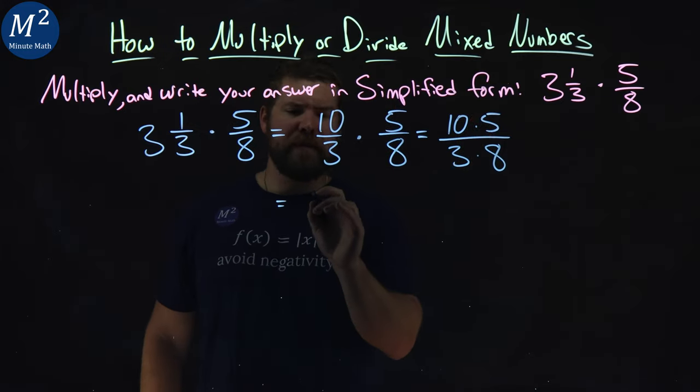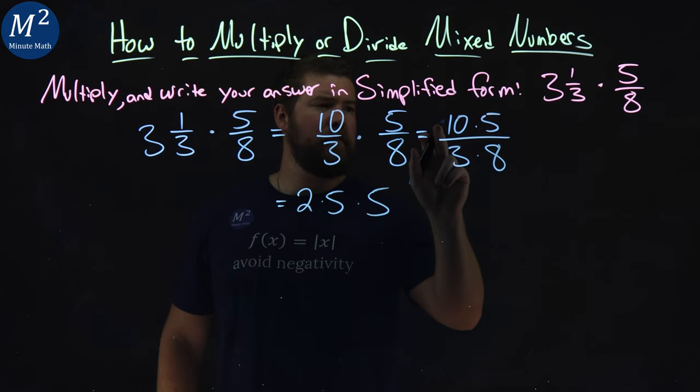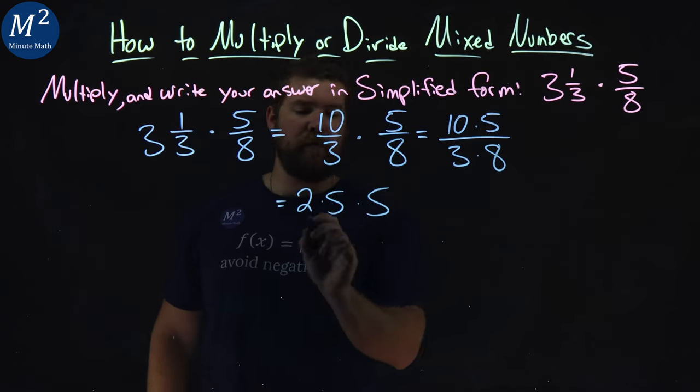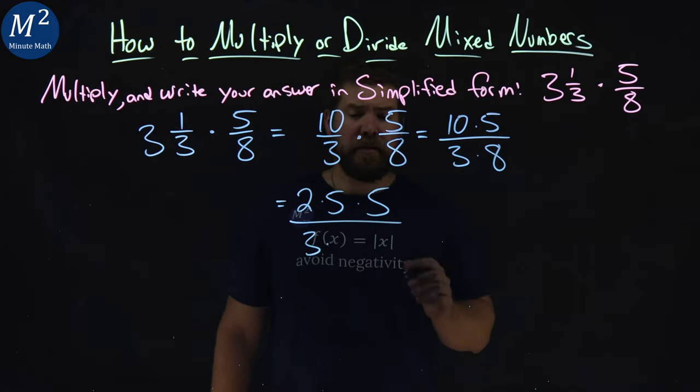All right. Ten, well, that's two times five times five, right? So we have ten is two times five and a five. Denominator, three doesn't break down, but eight is two times four.